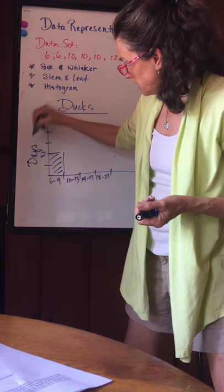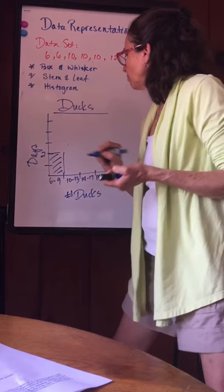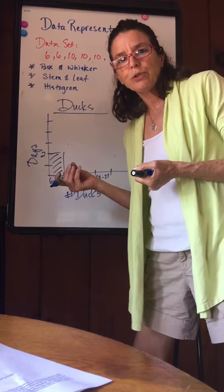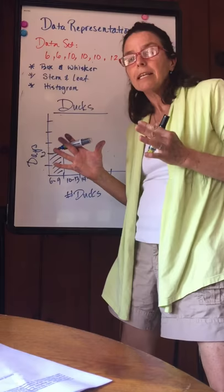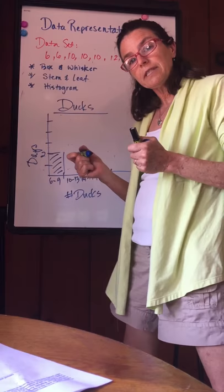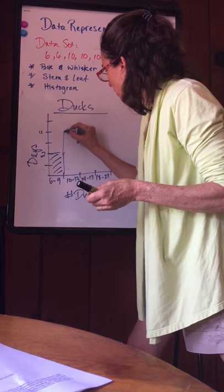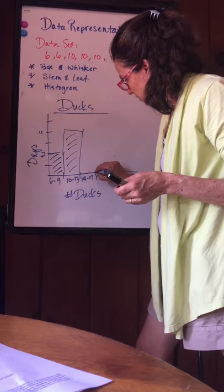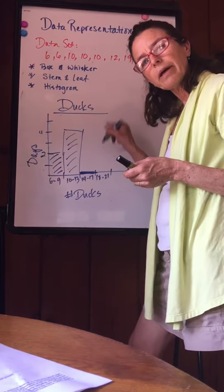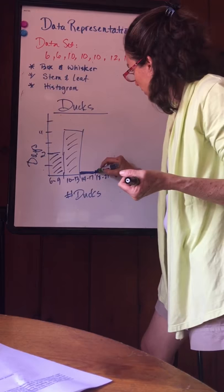So this is number of days that this happened and this is number of ducks. I could have a nice little fancy title with a picture. You'll see in one of the websites I sent you data can be made really beautiful and it also can be misleading. So 10 to 13 I get to go up to 4. 14 to 17 I have 0, so I'm just going to highlight 0 just to let you know that I didn't forget about this. And then I have 4.